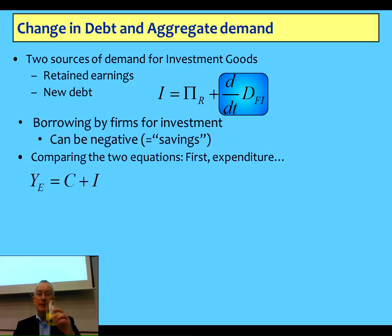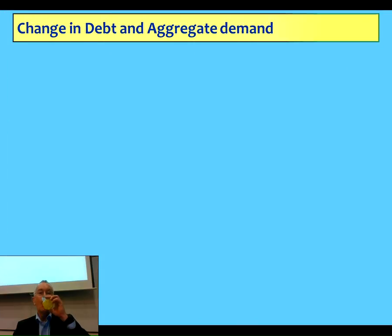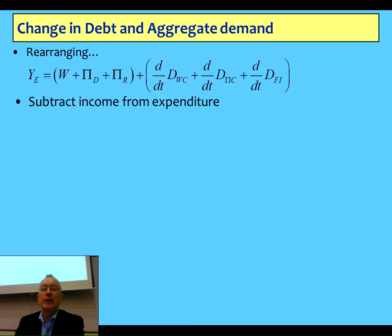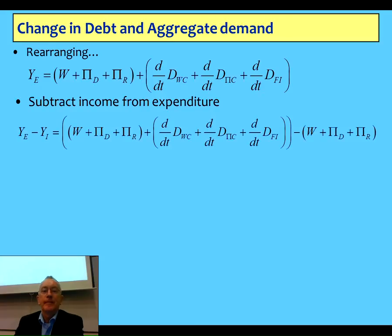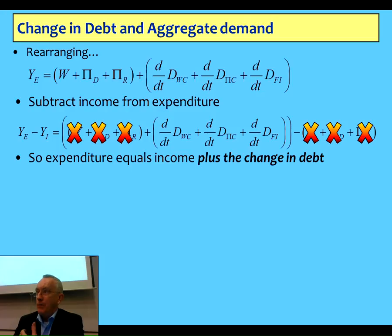Comparing the two equations — the consumption expenditure equation and what it's actually financed by — it's wages plus change in debt, profit plus change in debt, retained earnings plus change in debt. Rearranging and cancelling, the change in debt finances spending beyond income. This is the point that Schumpeter made, Fisher made, Minsky made, and so on. For the non-bank financial sector, expenditure equals income plus change in debt.